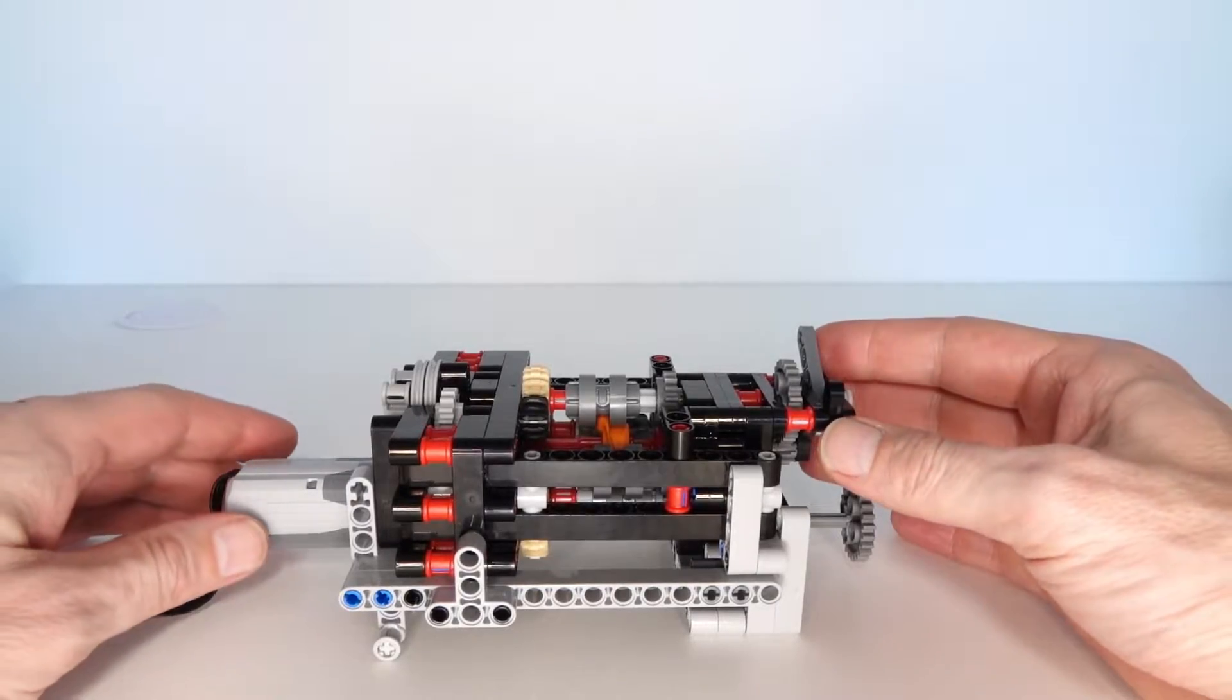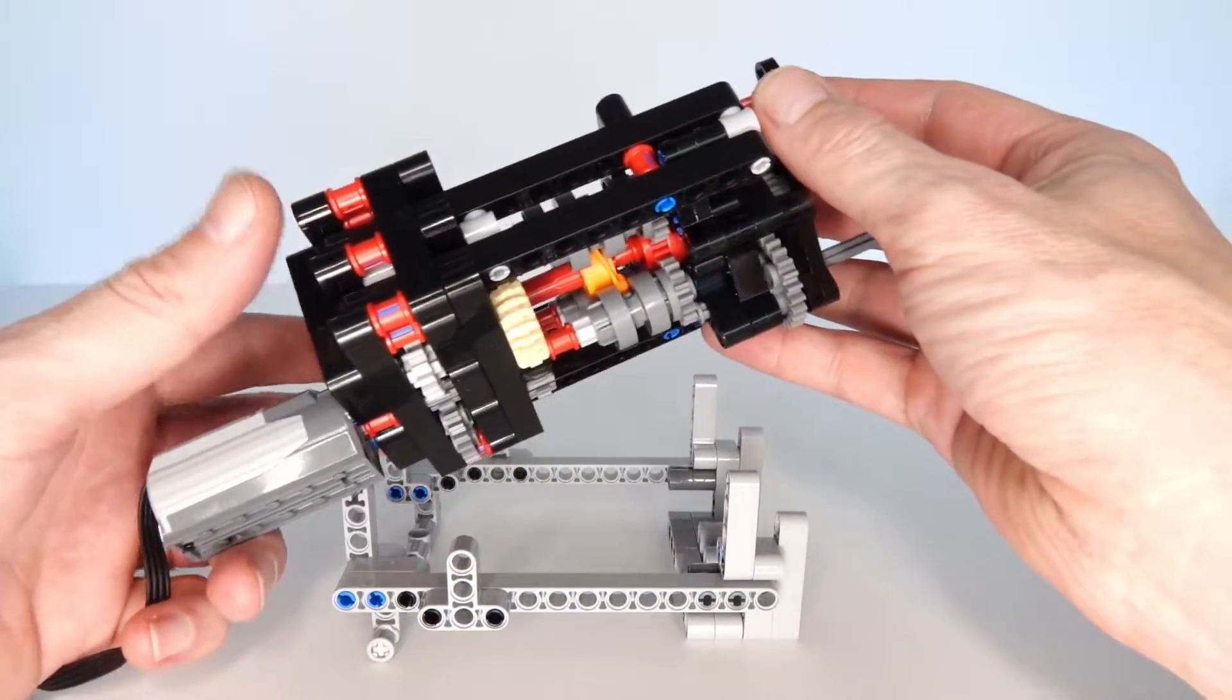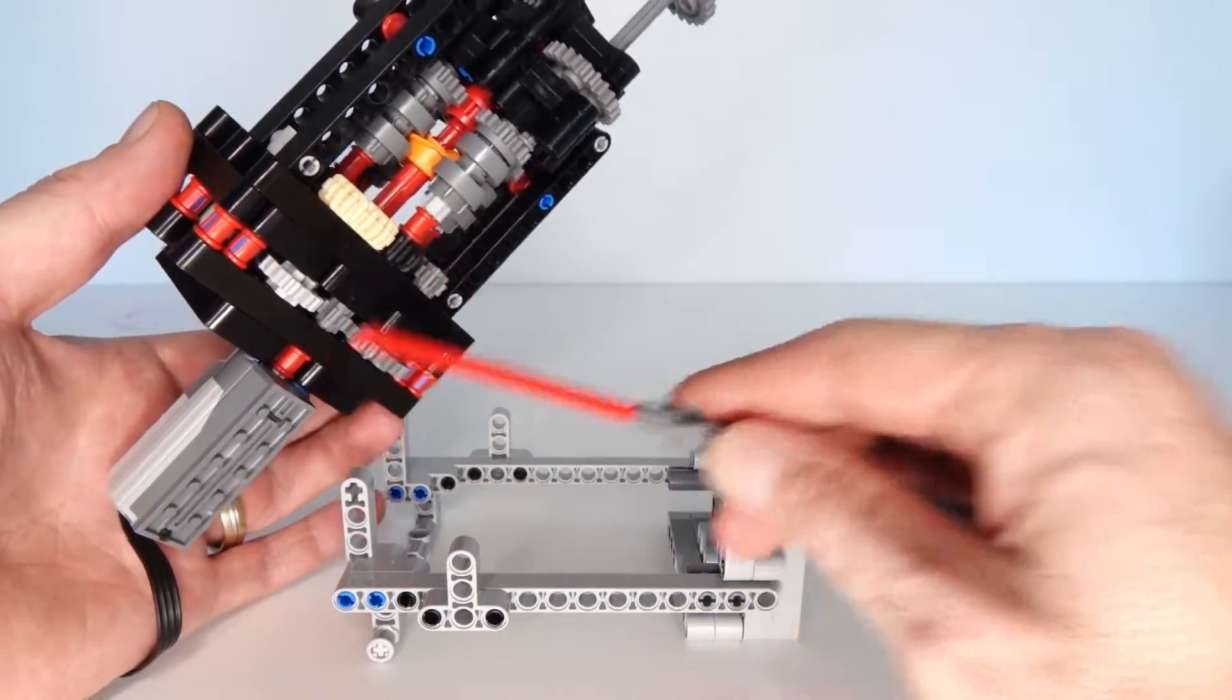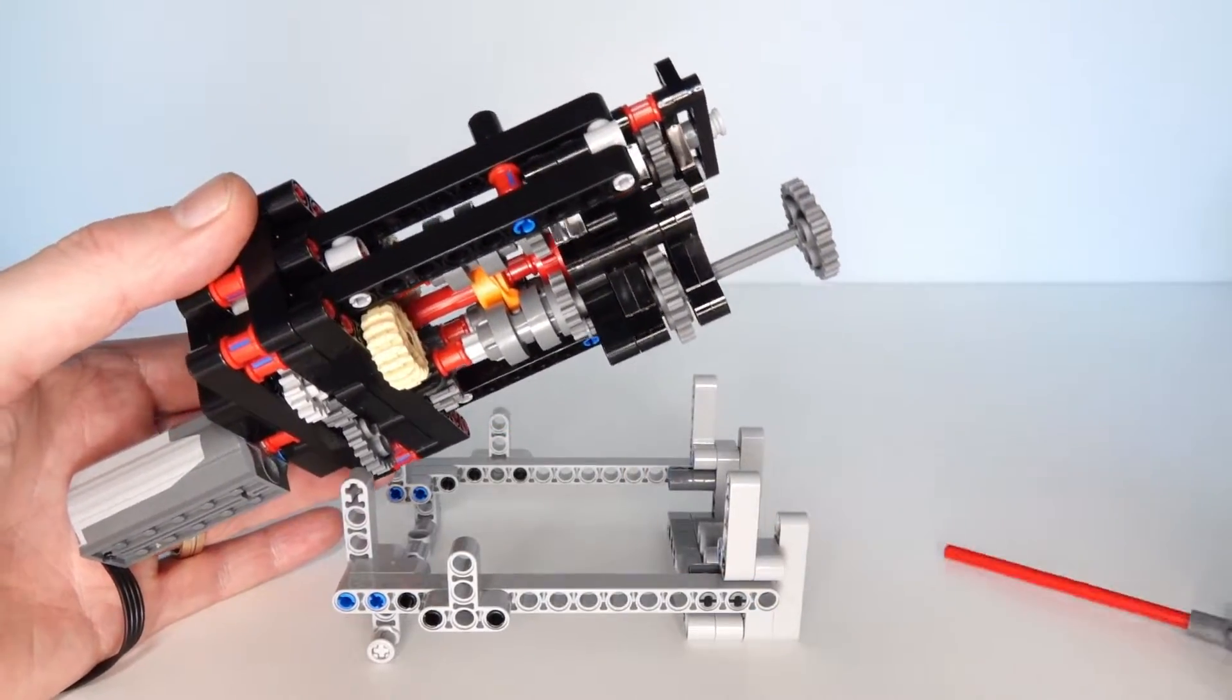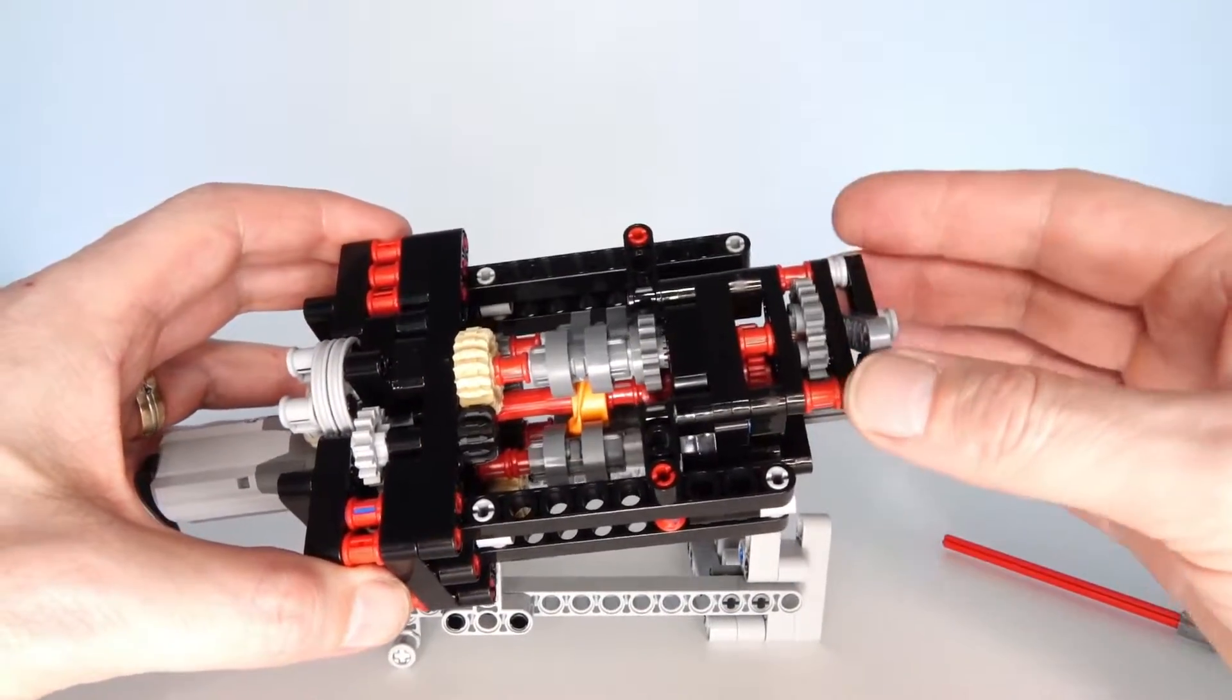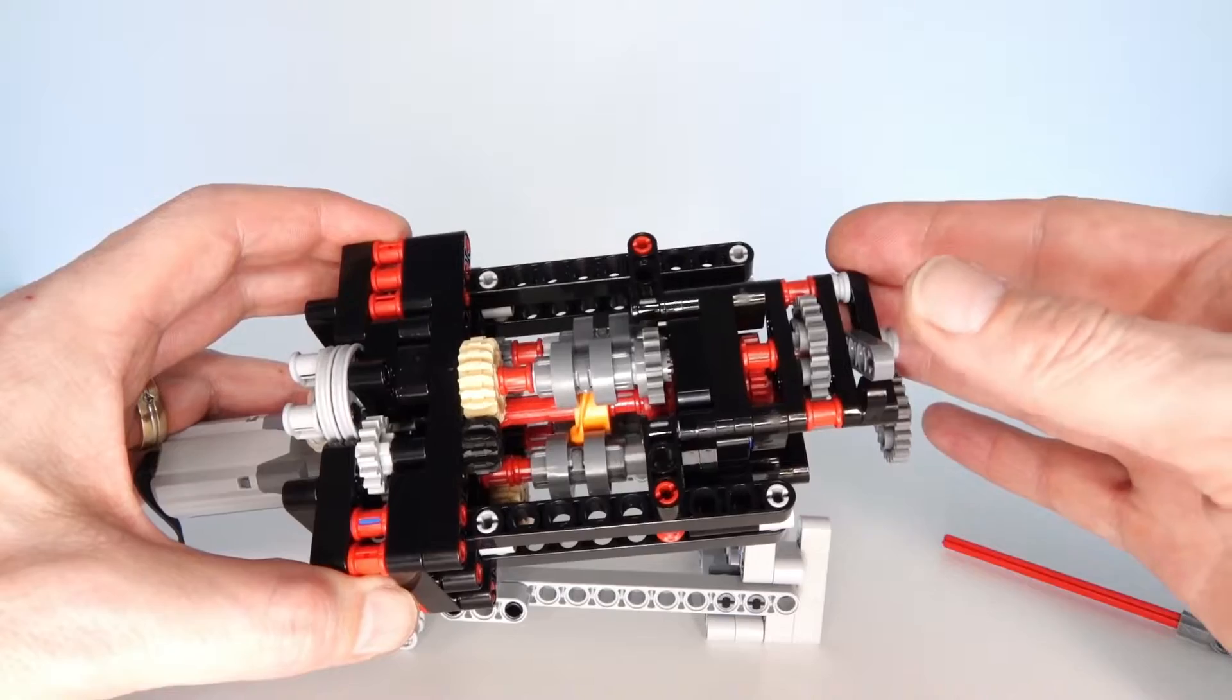So I'll just explain how this gearbox works. On the left here we have the input axle driven by this motor. On the right here we've got the output axle and at the top we have the gear lever. So like I said we can switch between four different gears.